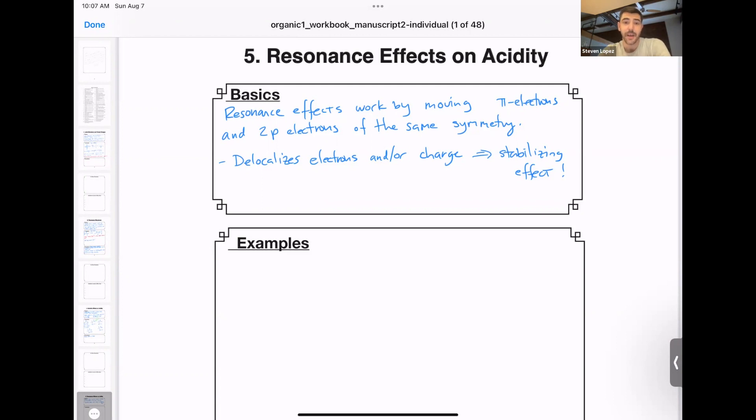Here are the basics. First of all, resonance effects work by moving pi electrons and 2p electrons of the same symmetry throughout a molecule. P orbitals can be aligned along the x, y, or z axes.